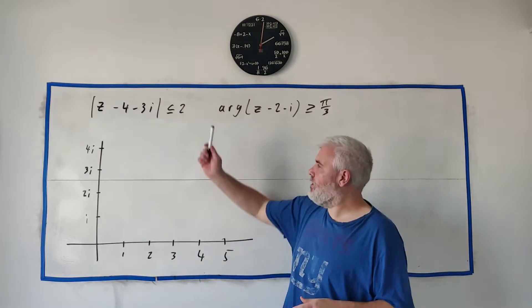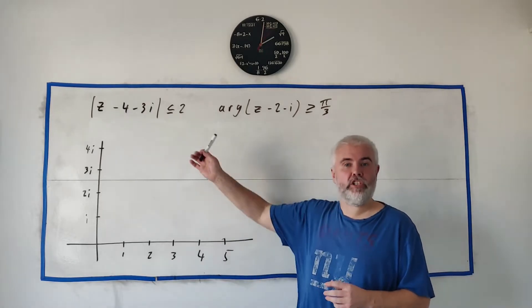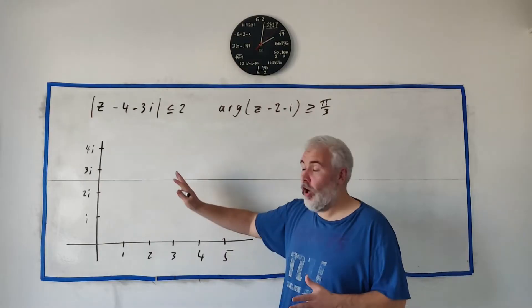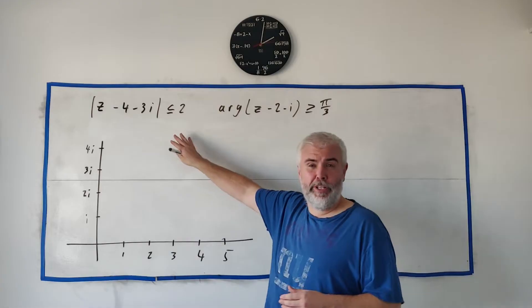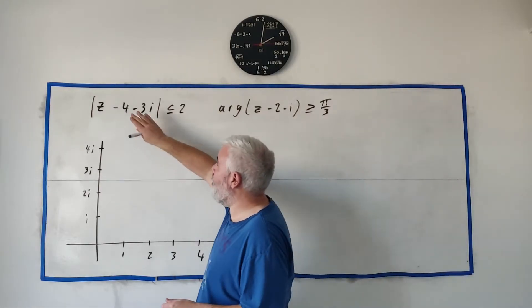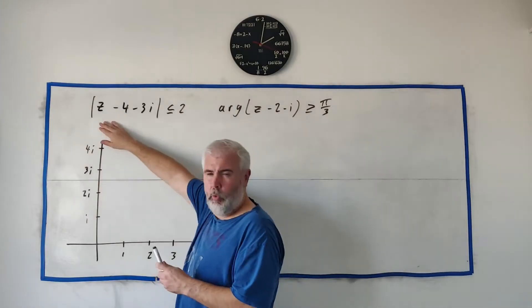In question 6 they give us these two inequalities here and ask us to shade the region that these two describe on an Argand diagram. So how do we do that? First thing I want to rewrite both of these. We know a lot about the modulus of the difference of two complex numbers but that's not quite what I see here.